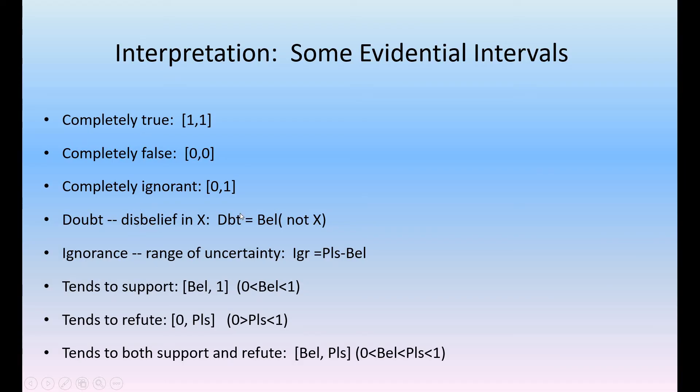Doubt disbelief in X is belief not X. Ignorance, range of uncertainty, ignorance equals plausibility minus belief. Tends to support if belief, 1, 0 less than belief less than 1. Tends to refute 0, plausibility, 0 greater than plausibility less than 1. Tends to both support and refute, belief, plausibility, 0 less than belief less than 1. Like that, some assumptions are given here in Dempster-Shafer theory.